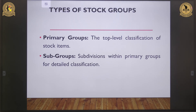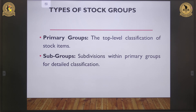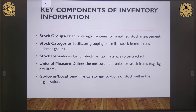The primary group basically represents the top-level classification of stock items. On the other hand, the subgroup is used to further categorize items under a parent group. The primary group is also called the parent group, and subgroups can be created under the primary group. There are various components of inventory information when creating a stock group. The first is the stock group itself, which is for categorization — for example, in a retail business, stock groups can be electronics, clothing, or furniture.